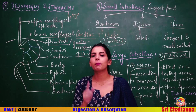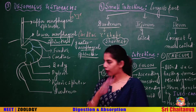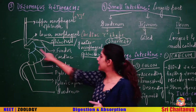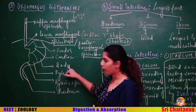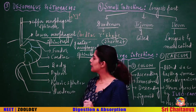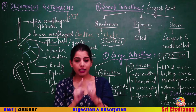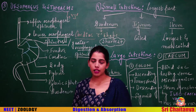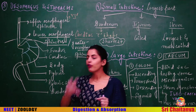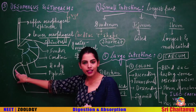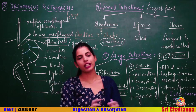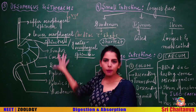The stomach has four parts: the dome-shaped fundus at the top, the cardiac region where the esophagus opens, the body (the maximum part), and the pyloric region. Since the esophagus opens into the cardiac region, the lower esophageal sphincter is called the cardiac sphincter. The sphincter regulating entry of food from the stomach into the duodenum (first part of the small intestine) is called the pyloric sphincter.